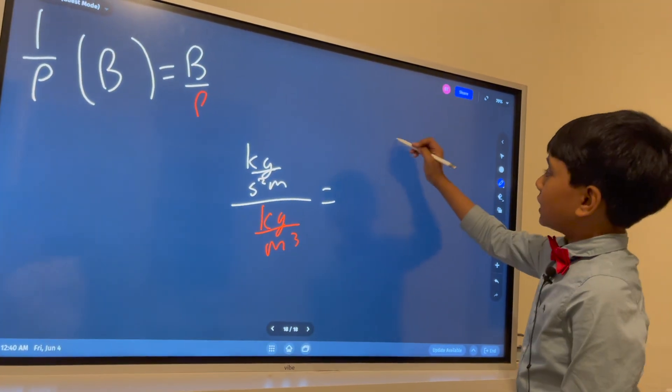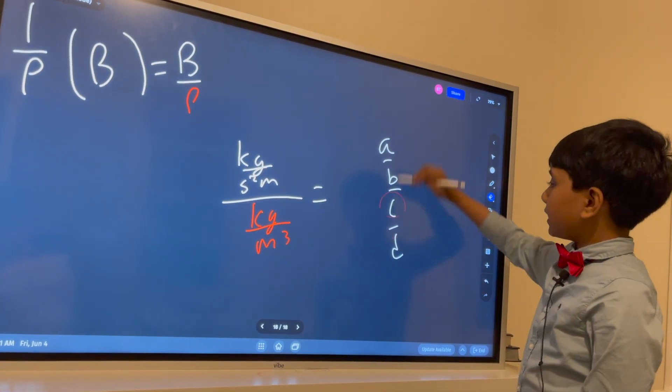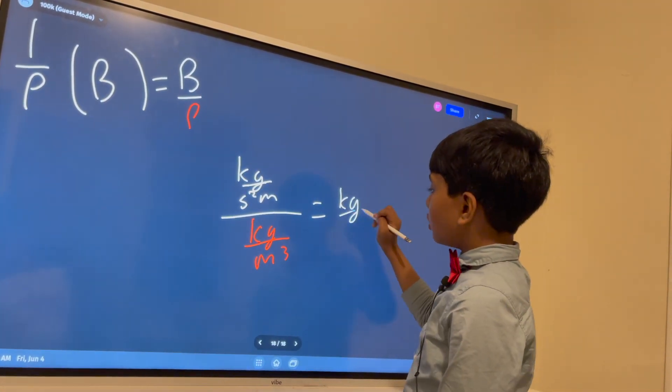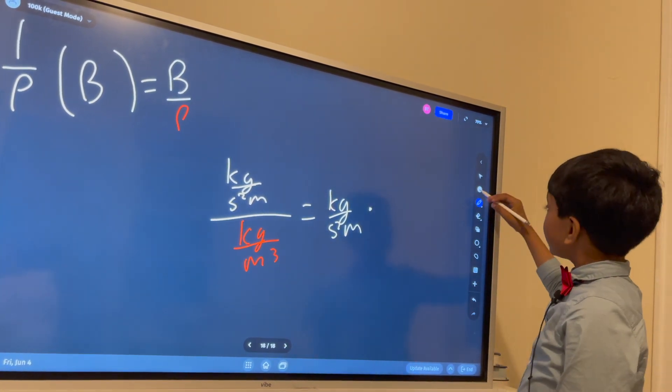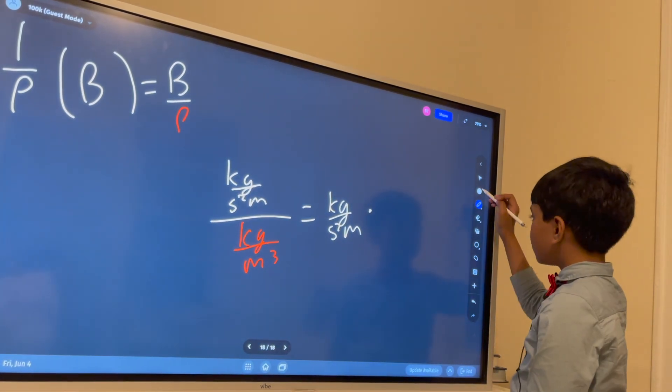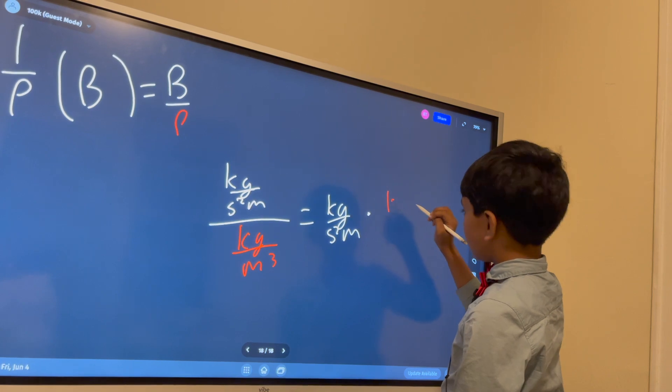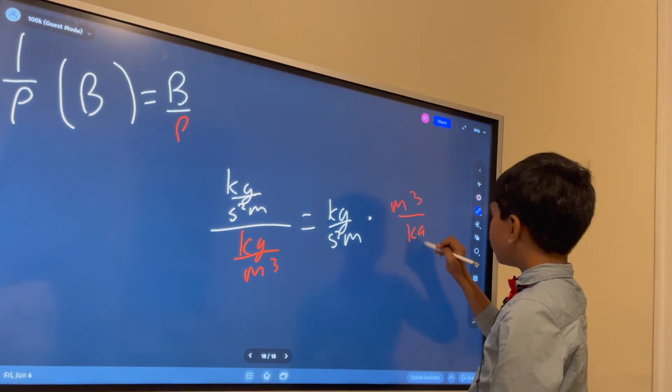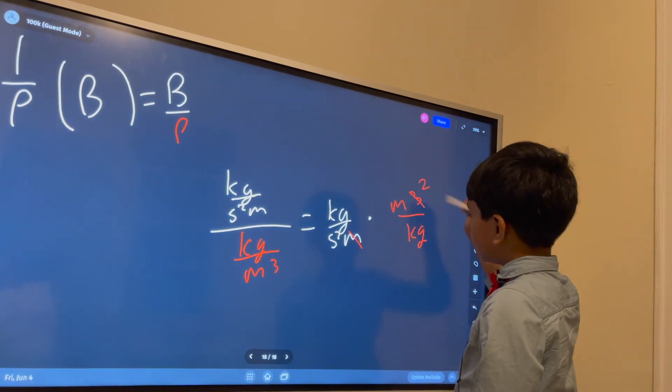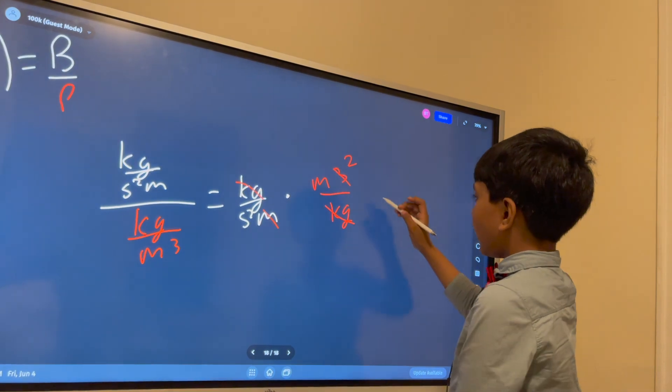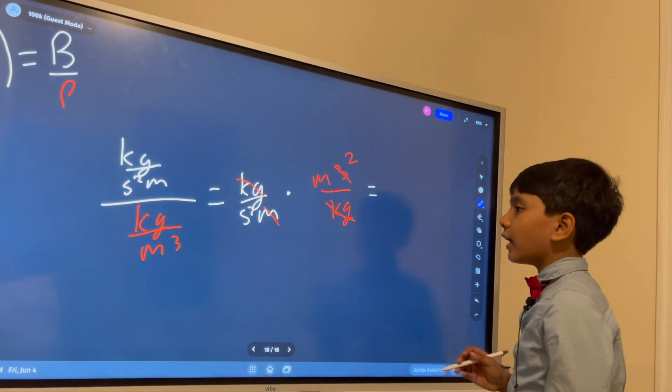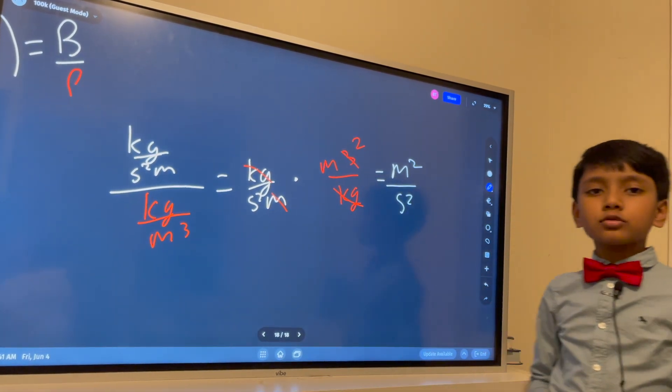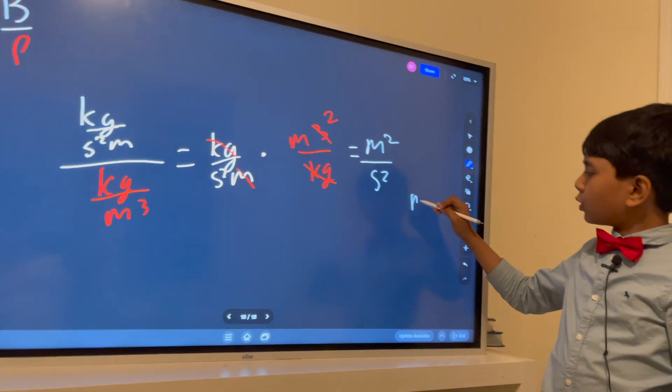Now we can use the a over b over c over d rule, trust me the name is long but please stick with me guys, to transform this to kilogram over second square meter times cubic meter over kilogram and then we cancel that out, this is two, these are gone and that leaves us with meter squared over second squared but this doesn't seem right wasn't it supposed to be meters over second?